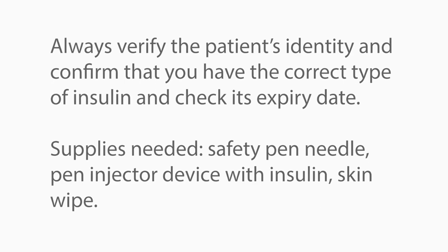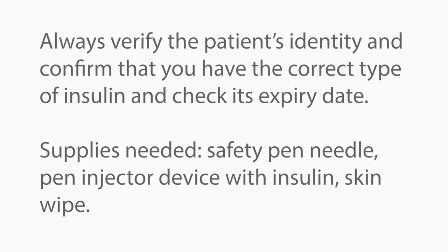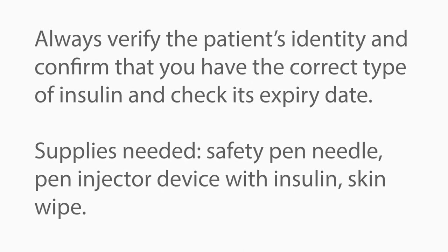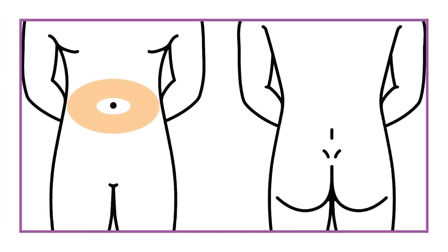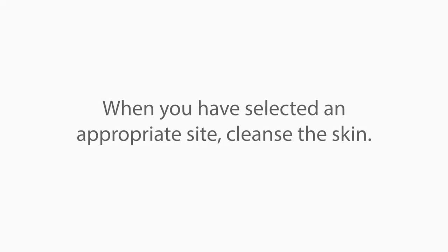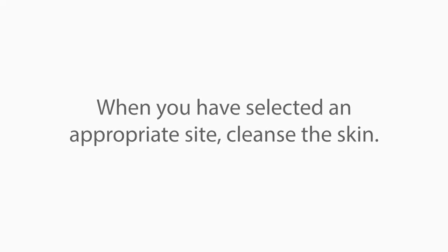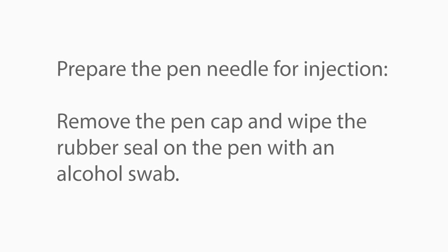Always verify the patient's identity and confirm that you have the correct type of insulin and check its expiry date. Choose a healthy injection site. The recommended areas are the abdomen, thigh, back of arms, and buttocks. Rotate between injection areas. When you have selected an appropriate site, cleanse the skin. With the patient ready, you can prepare the pen needle for injection.